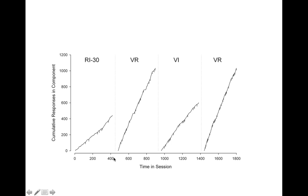What happens when we turn an interval schedule into a ratio schedule? It speeds up. When we turn a ratio schedule into an interval schedule, behavior slows down. When we take that interval schedule and turn it back into a ratio schedule, it flies back up. So we see slow steady responding on interval, very high responding on ratio. Even though reinforcement rate is held constant, there's something fundamentally different about interval and ratio schedules.